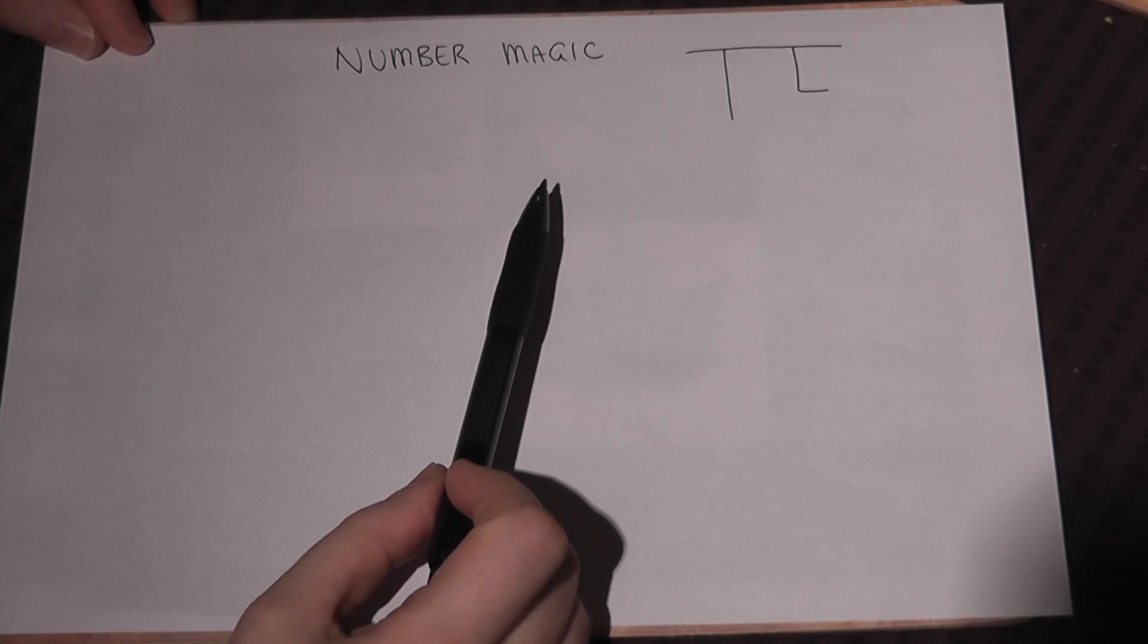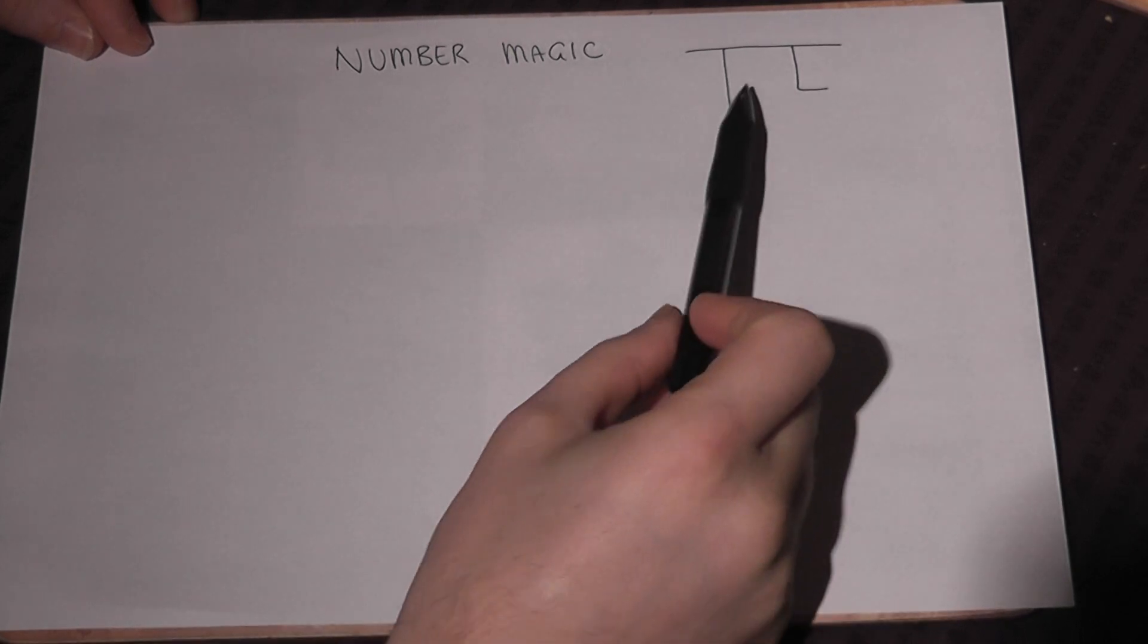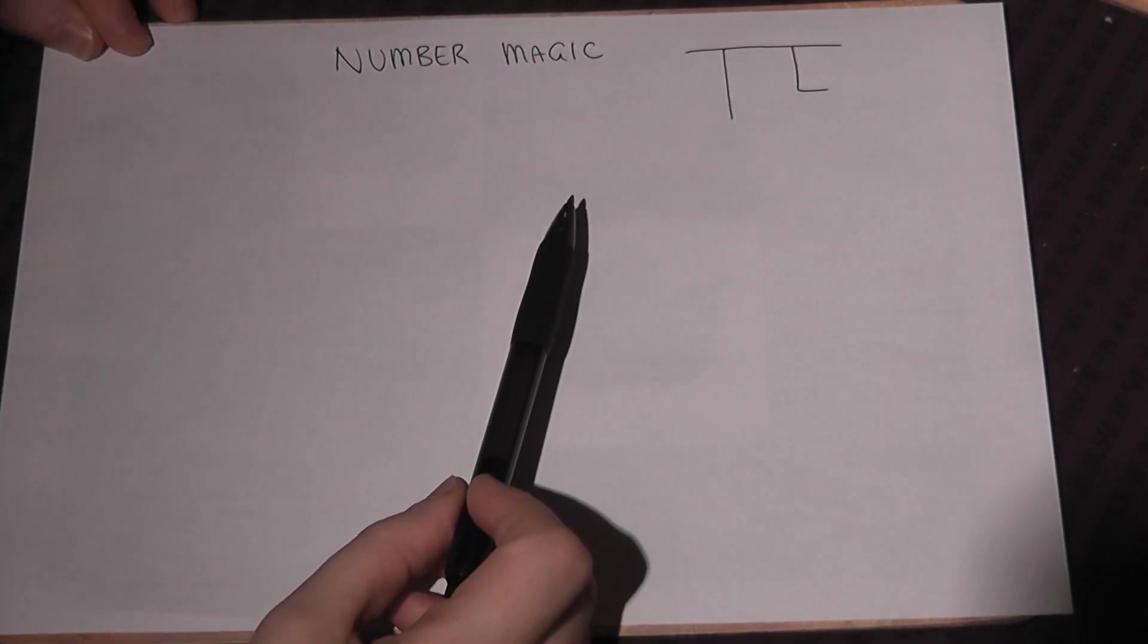Now when I say so, you're going to stare at this symbol for three seconds, and when I say stop, you're going to write down the first number with three digits that comes into your head, with the only criteria being that the first and last digit must be different.